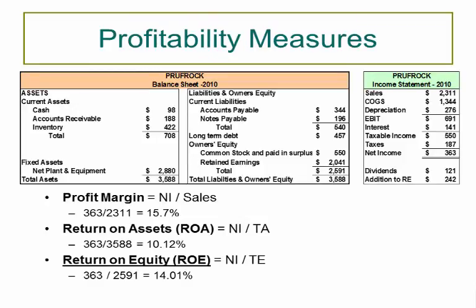Moving into the profitability measures—one of the better known categories, and one of the most widely used by financial analysts. Profitability measures are really just a look at how well a firm uses its assets and manages operations. Profit margin is really just looking at the bottom line or net income—net income divided by sales. For Prufrock, this company generates 15.7 cents for every dollar in sales. You might also hear somebody say this company makes 16 cents on the dollar. The higher the profit margin, the better, because it usually signals low expenses relative to sales and better overall operational efficiency.